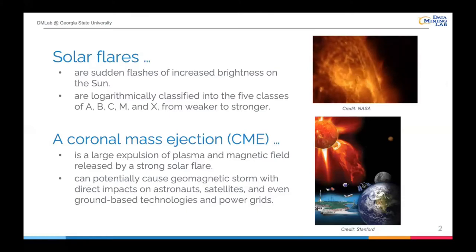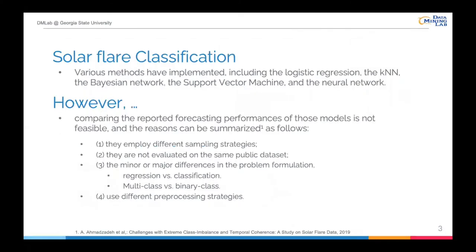With an X-class flare, a coronal mass ejection, or CME, is released by a stronger solar flare, which is a large expulsion of plasma and magnetic field. CME can potentially cause a geomagnetic storm with direct impacts on astronauts, satellites, and even ground-based technologies and power grids.